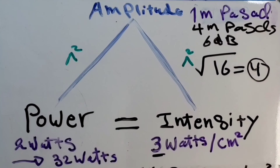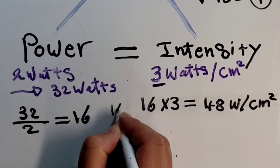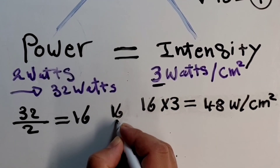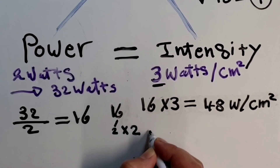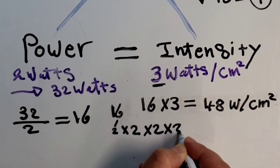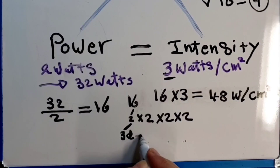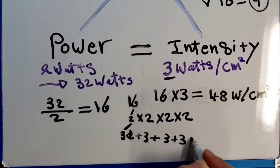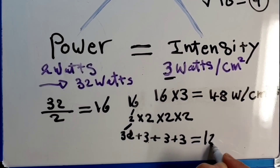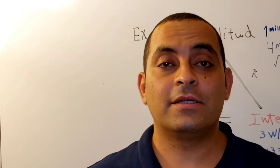Because the intensity and the power increased by a factor of sixteen, and sixteen equals two times two times two times two, the decibel for each factor of two is three decibels. So three plus three plus three plus three equals twelve decibels. Thank you for watching and see you in the next video.